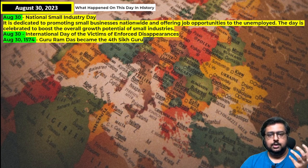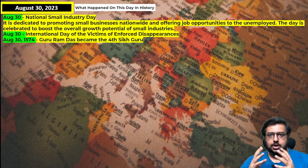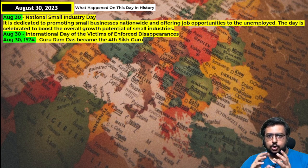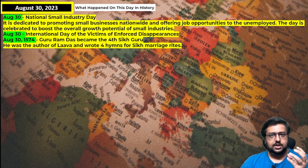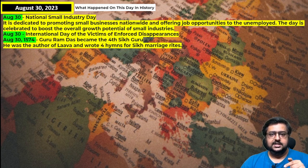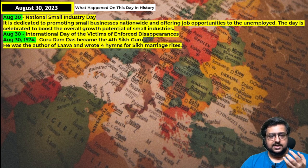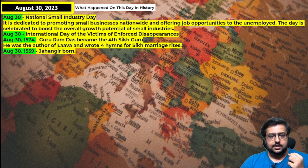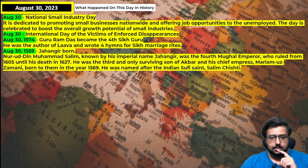Related to Indian history, Guru Ramdas was the fourth Sikh Guru. All 10 Sikh Gurus are important — Guru Gobind, Guru Arjun, and many others each have significance related to the Golden Temple and the Guru Granth Sahib. This person authored many books related to marriage rights in Sikhism, and his birthday was on August 30, 1574.